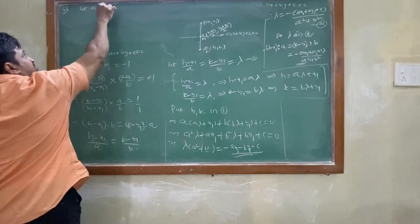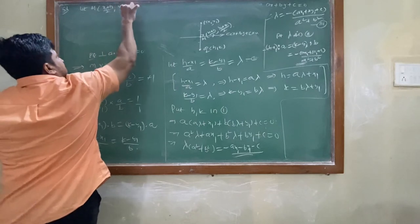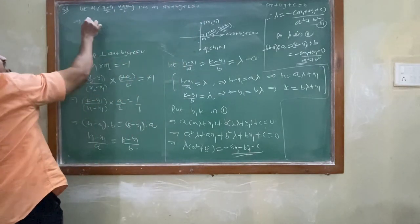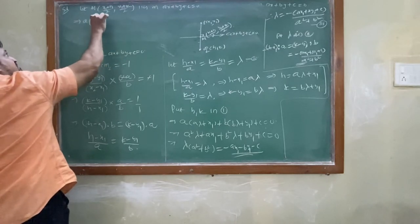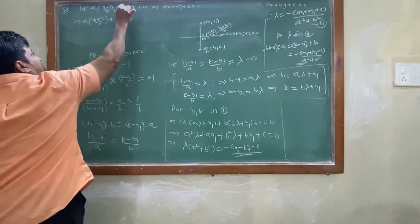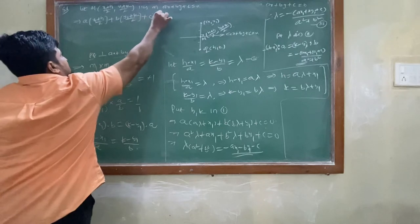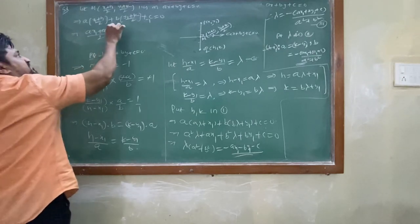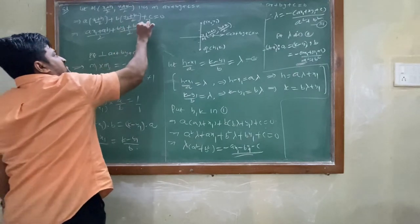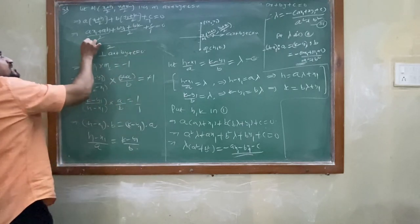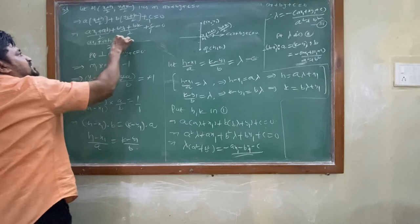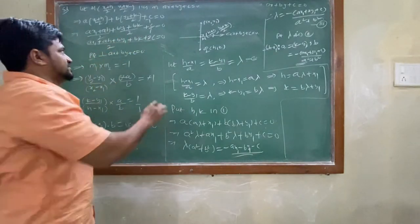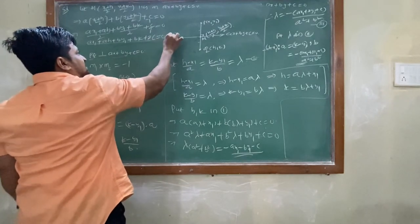Since M lies on the line, substitute M's coordinates into ax+by+c=0: a·(x1+h)/2 + b·(y1+k)/2 + c = 0. A is multiplied to both terms; B is multiplied to both terms. Cross-multiplying by 2: a(x1+h) + b(y1+k) + 2c = 0. This is equation 1.